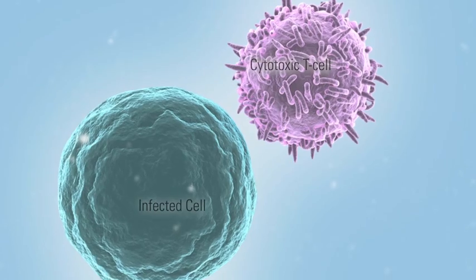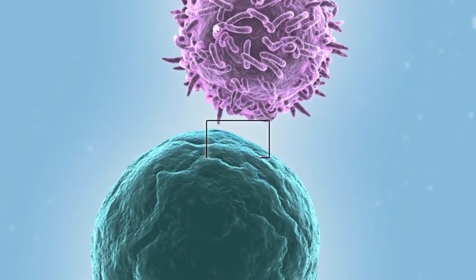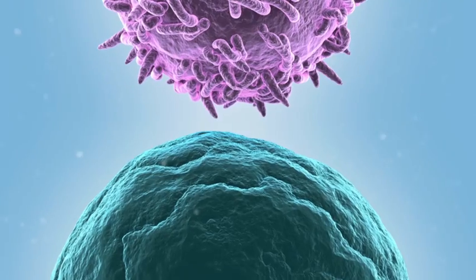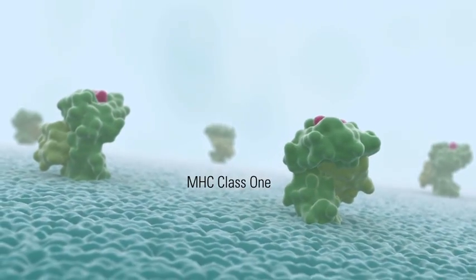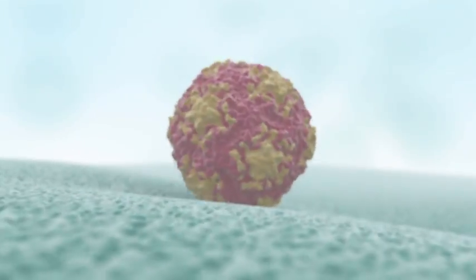Cells can signal to the immune system that they have been infected by a virus by presenting viral antigens to cytotoxic T cells using class 1 molecules of the major histocompatibility complex. This animation will explore the assembly of class 1 molecules, an essential part of host defense against viral infection.